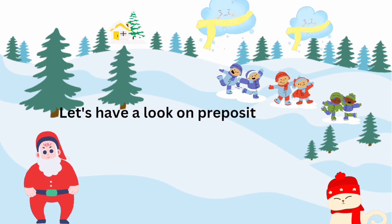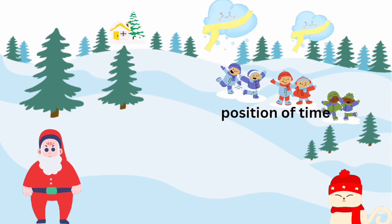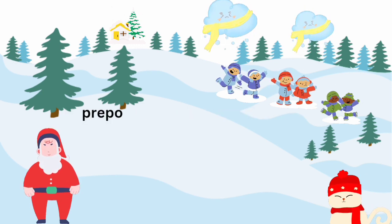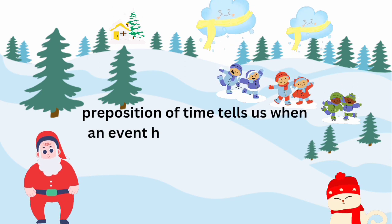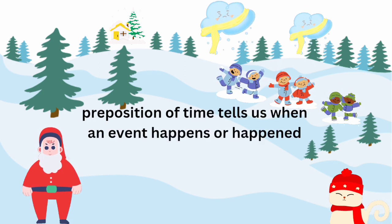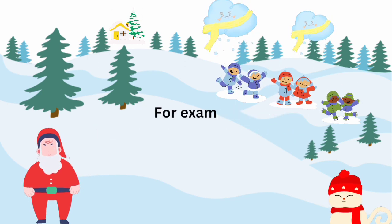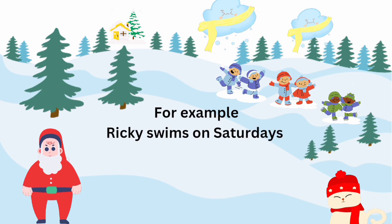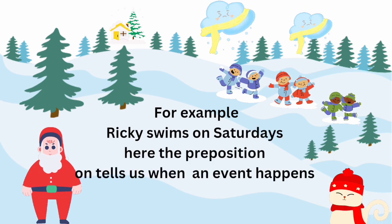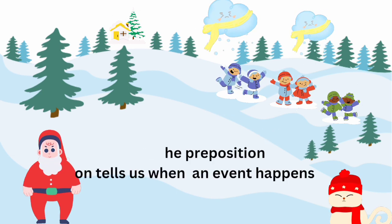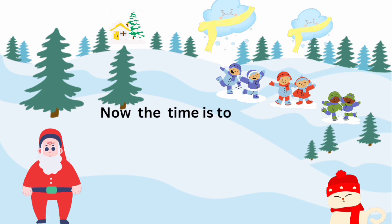Let's have a look at preposition of time. Preposition of time tells us when an event happens or happened. For example, Ricky swims on Saturdays. Here the preposition 'on' tells us when an event happens.